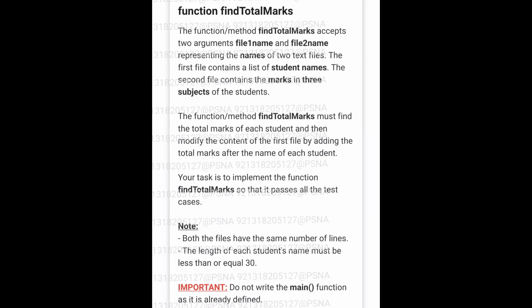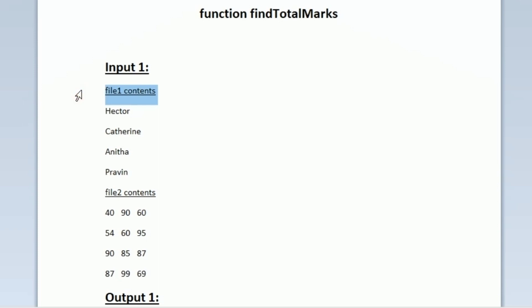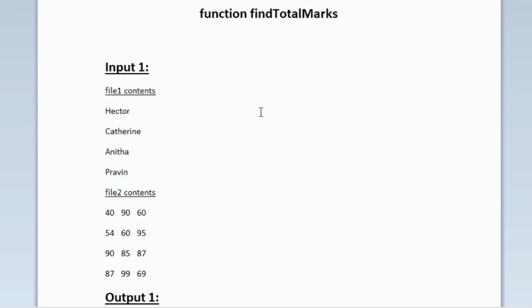This is the question asked in today's SkillRack daily challenge. We will be given two files as input. The first file will contain the names of students — Hector, Catherine, Anita, and Praveen. The second file will contain the marks obtained by each and every student.